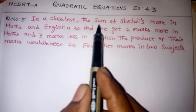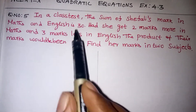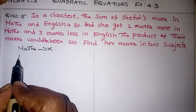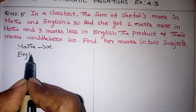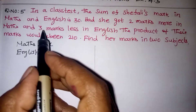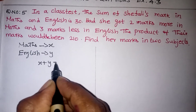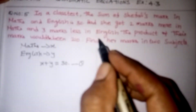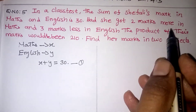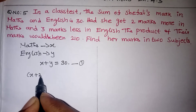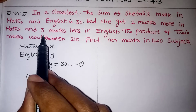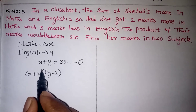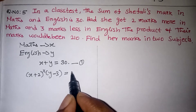From the beginning we come to the question. Sum of Maths and English marks is 30. So let us take the Maths mark as X and the English mark as Y. So X plus Y equals 30 is the first equation. Second: had she got two more marks in Maths she got X plus 2, and three less marks in English means Y minus 3. The product of these two marks equals 210.